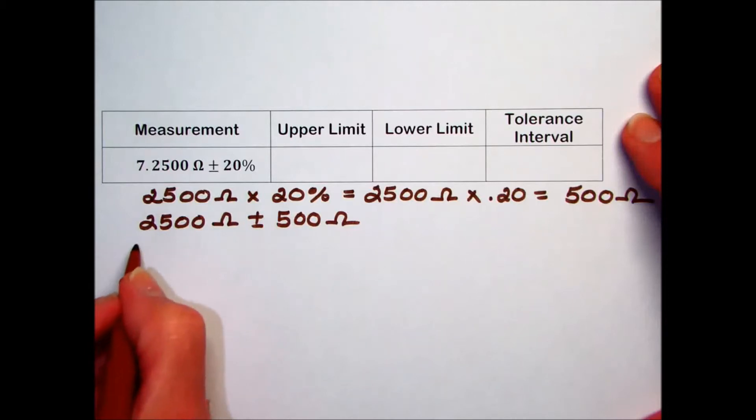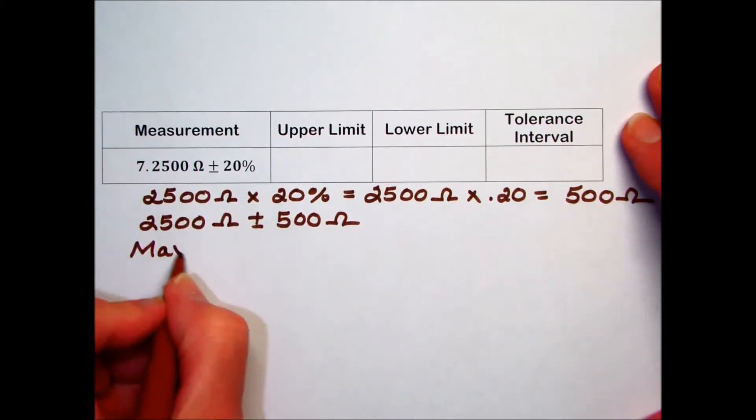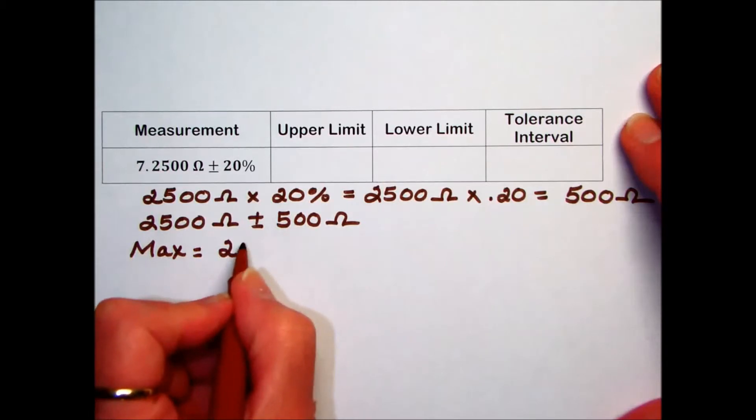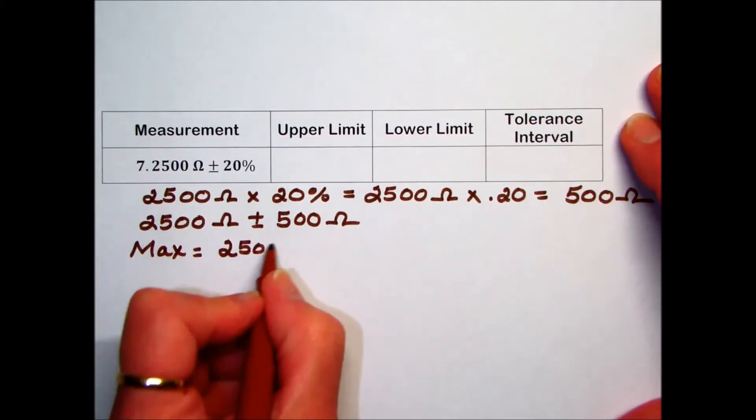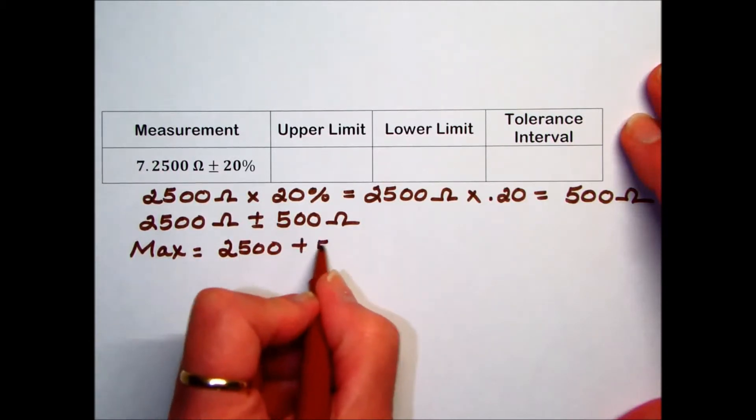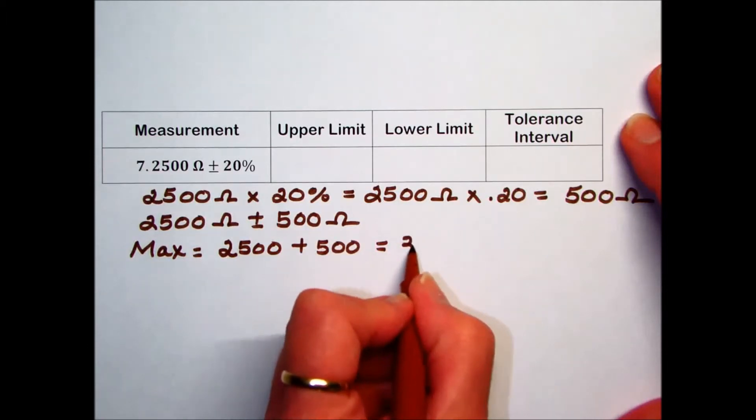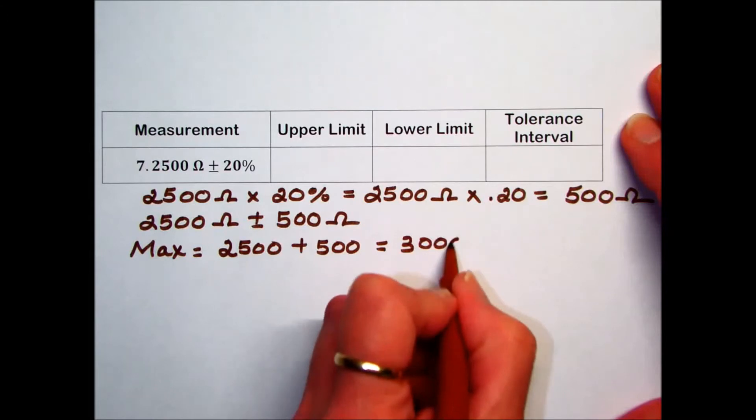We're now ready to find the upper limit, sometimes called the maximum value, which is found by taking the standard measurement 2500 plus our tolerance. When we add those together, we come up with a value of 3000 ohms.